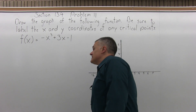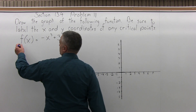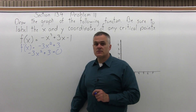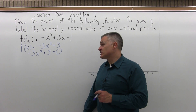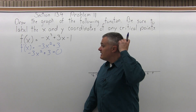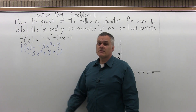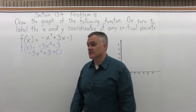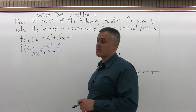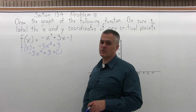This is Section 13.4, Problem number 11. It says: draw the graph of the following function. Be sure to label the x and y coordinates of any critical points. The function is f of x equals negative x cubed plus 3x minus 1.